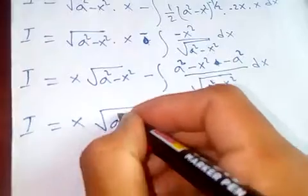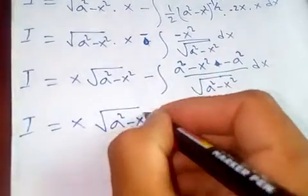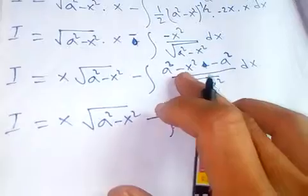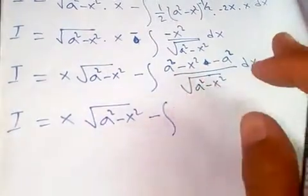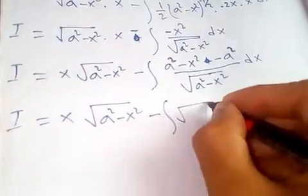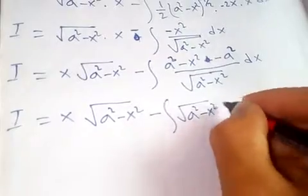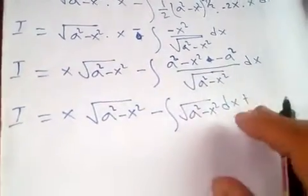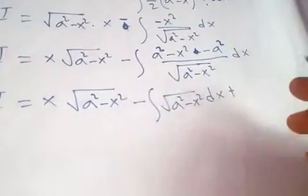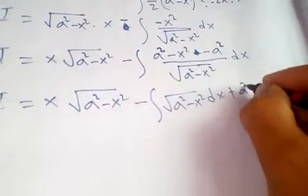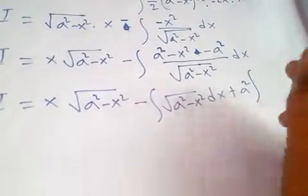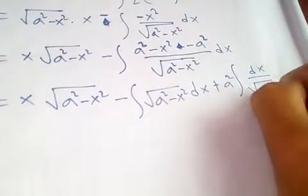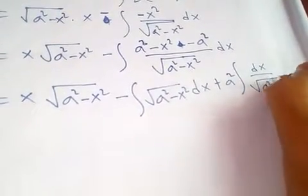So I = x√(a² - x²) minus the integral of (a² - x²)/√(a² - x²) dx, which simplifies to minus the integral of √(a² - x²) dx, plus a², which is a constant taken outside the integral, times the integral of dx / √(a² - x²).